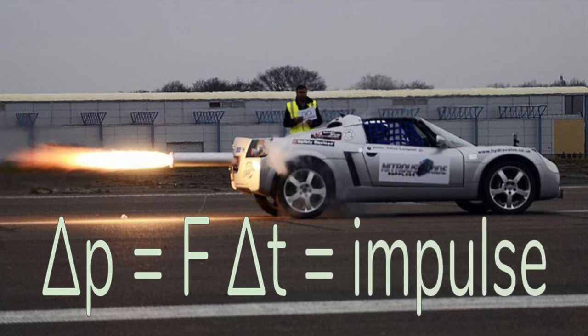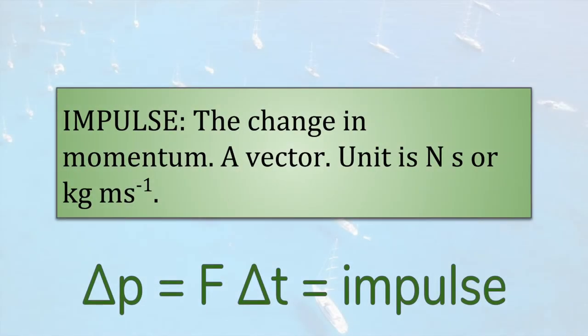Another word for change in momentum is impulse. Here is the definition of impulse. It's the change in momentum, and like momentum, it's a vector. The unit can be written as kilogram meters per second, like any momentum, but it most often is shown as Newton seconds, which we can see is also correct from the formula that multiplies as force and time taken.